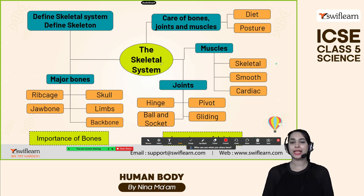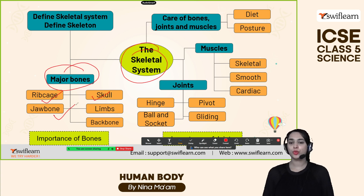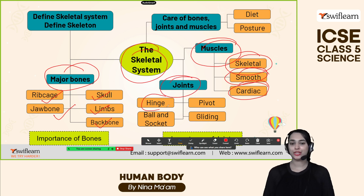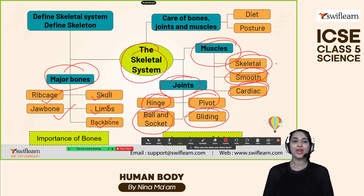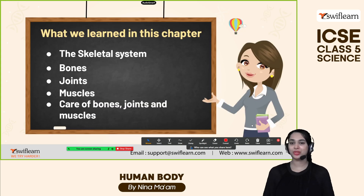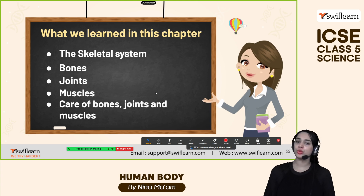Let's recap the skeletal system. The major bones are the ribcage, skull, jawbone, limbs, and backbone. The major muscles are skeletal muscle, smooth muscle, and cardiac muscles. The important joints are the hinge joint, pivot joint, ball and socket joint, and gliding joint. We can take care of our muscles and joints through proper diet and posture. Today we learned about the skeletal system, bones, joints, muscles, and care of bones, joints, and muscles.